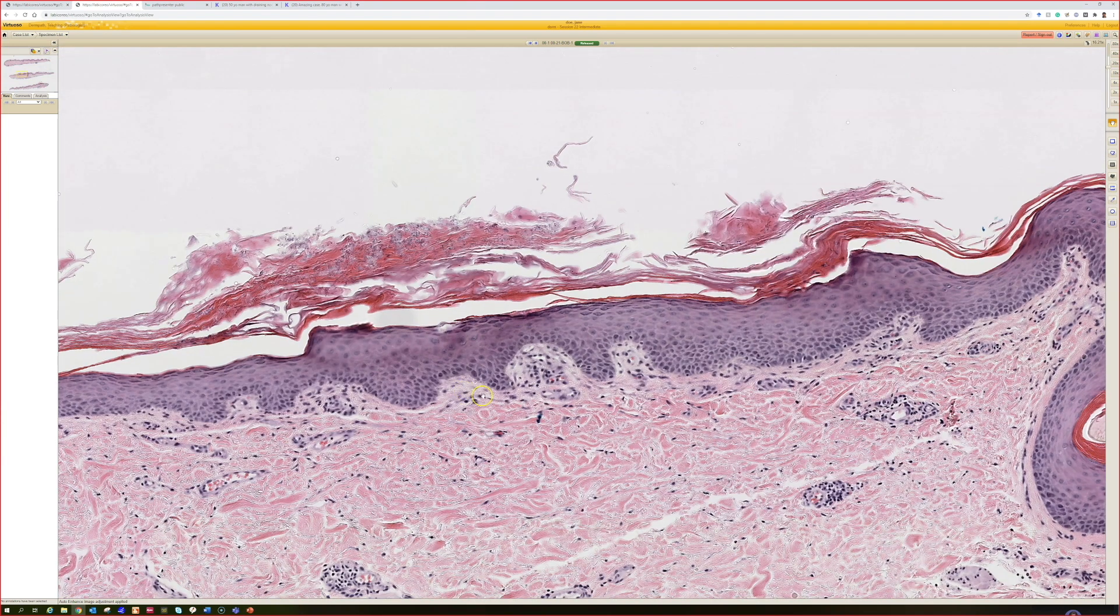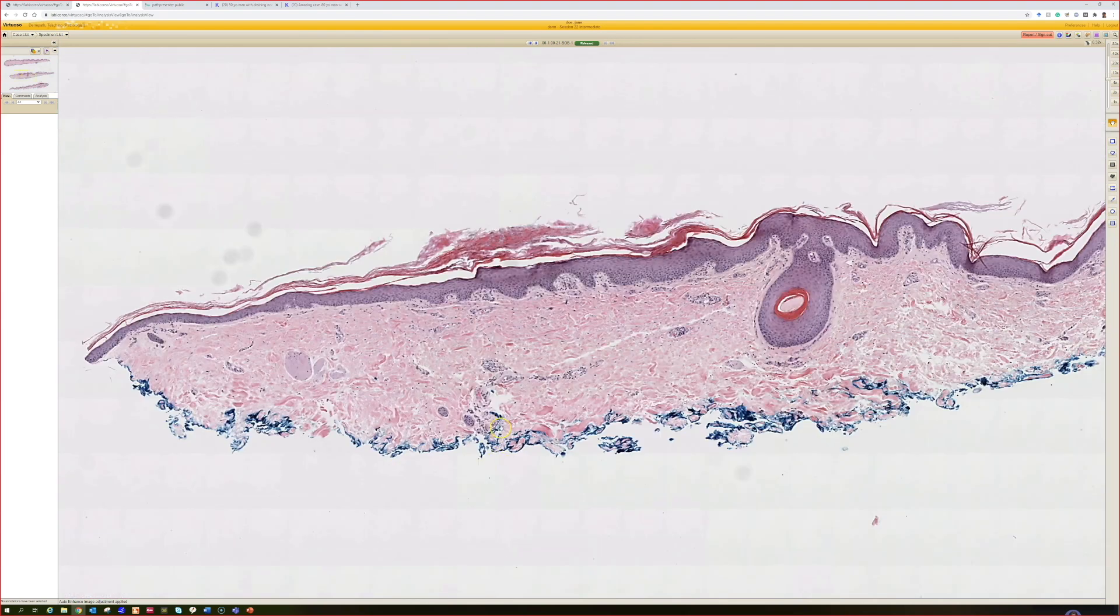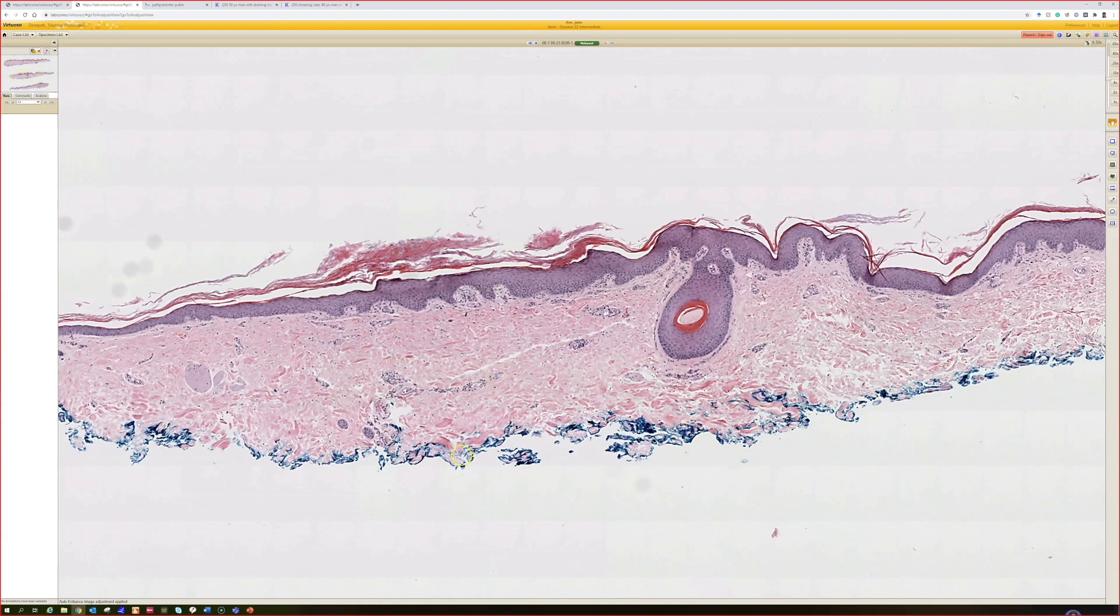So I tend to see this as an incidental tinea versicolor finding where there's actually hyphae and yeast in the setting of the dermatologist doing a biopsy for something else that was the actual lesion, and this was just like a bonus finding. I just actually had a case of that not too long ago.